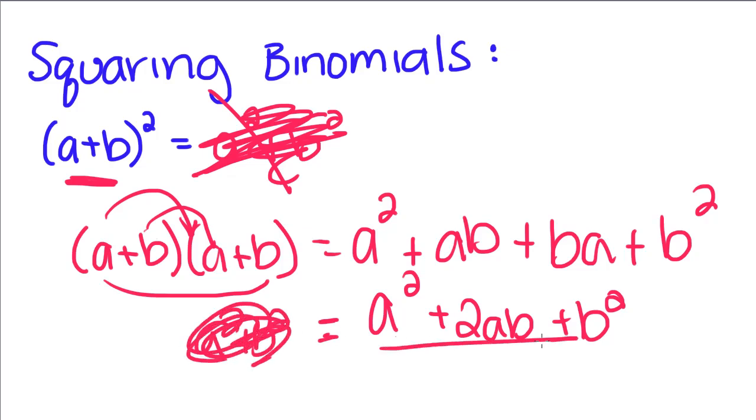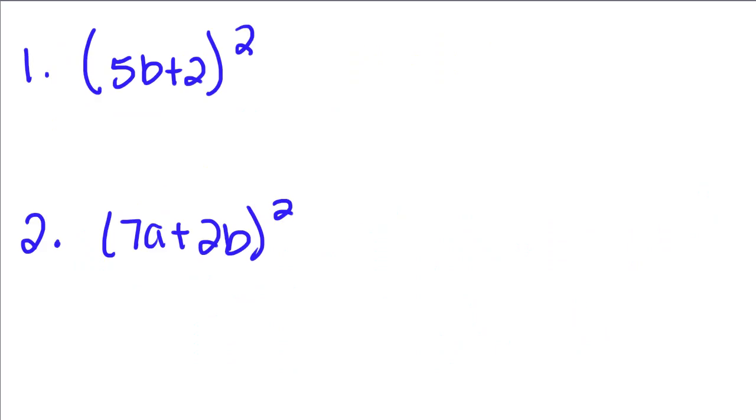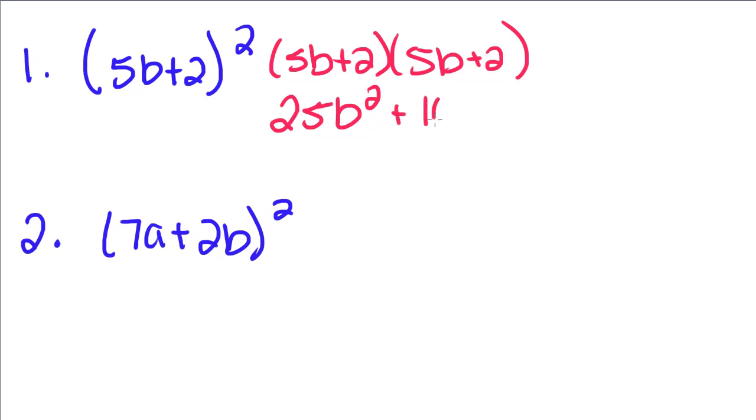So you have to make sure that you FOIL it out every time you square a binomial. So now we're going to do a couple examples. This is the same thing as this times this. So we're going to multiply the first two, 25b squared, then we're going to multiply the outsides, so 10b, the insides, 10b, and the lasts. So 25b squared plus 20b plus 4.